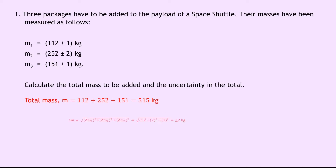Now to find the total uncertainty in the mass, you'll notice this little triangle symbol — this just means uncertainty in. So the uncertainty in the mass is equal to the square root of the uncertainty in M1 squared plus the uncertainty in M2 squared plus the uncertainty in M3 squared, which is equal to the square root of 1 squared plus 2 squared plus 1 squared, which is equal to plus or minus 2 kilograms stated to one significant figure. Writing this down as an absolute uncertainty, we have M equals 515 plus or minus 2 kilograms.